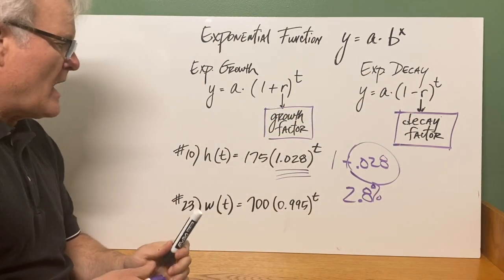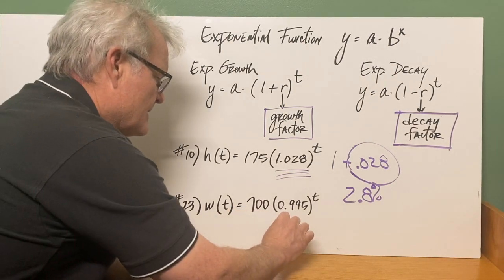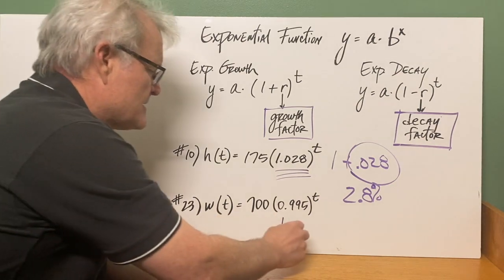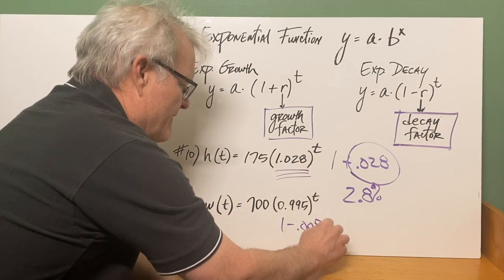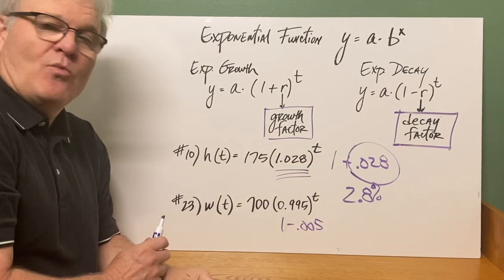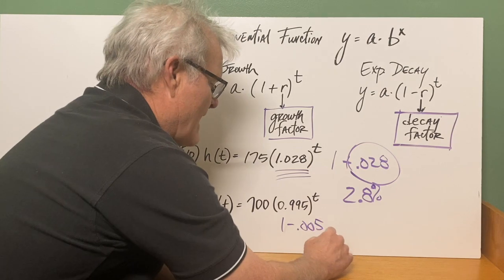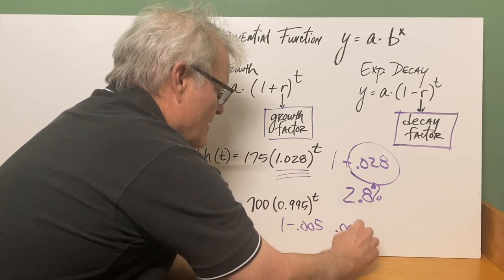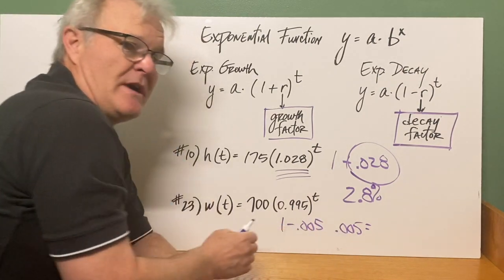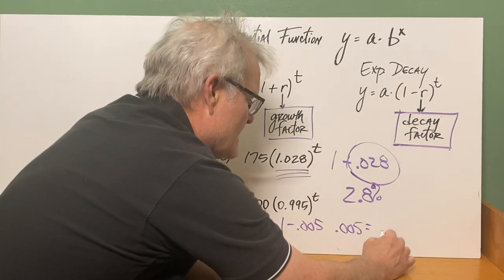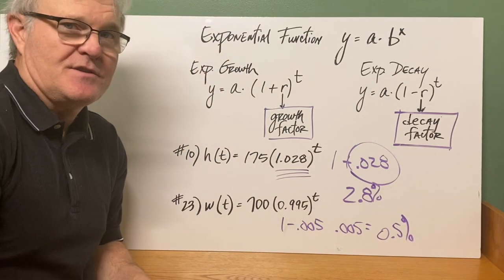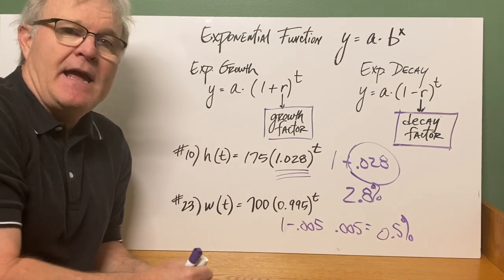And this is 1 subtract. Well, to get 0.995, that's going to be 1 minus 0.005. So for this one, your decay factor would be 0.005, which again, as a percentage would be, well, you're going to move the decimal two places to the right. This would be a 0.5 percent decay factor.